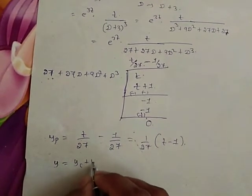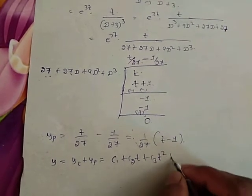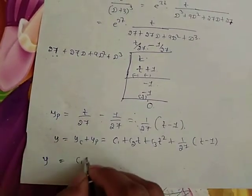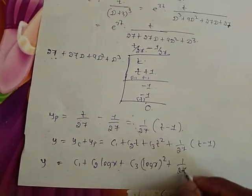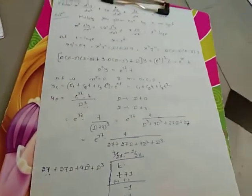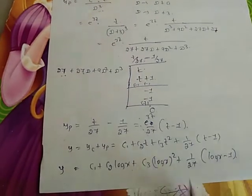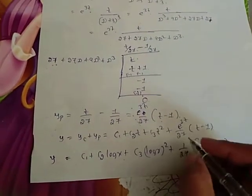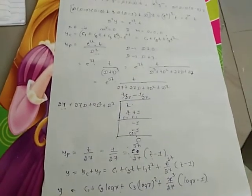Now write the complete solution: Y = Yc + Yp = C₁ + C₂T + C₃T² + (e^{3T}/27)(T − 1). Substituting T = log X and e^{3T} = X³, the complete solution is: Y = C₁ + C₂·log X + C₃·(log X)² + (X³/27)(log X − 1). That is the complete solution of the given Cauchy's linear equation.